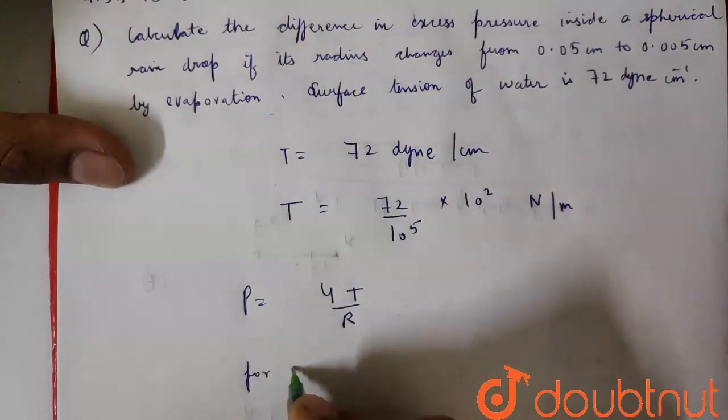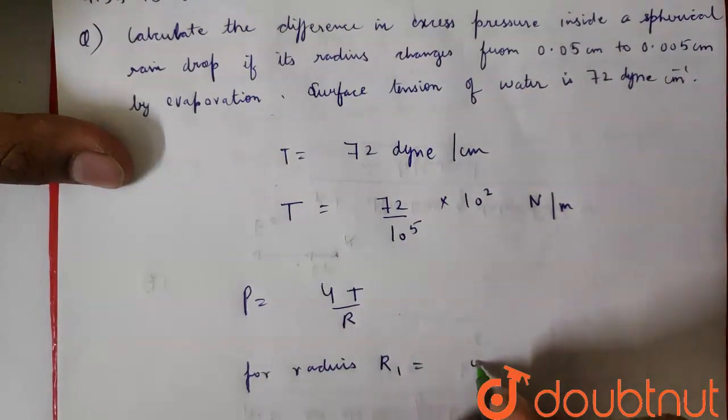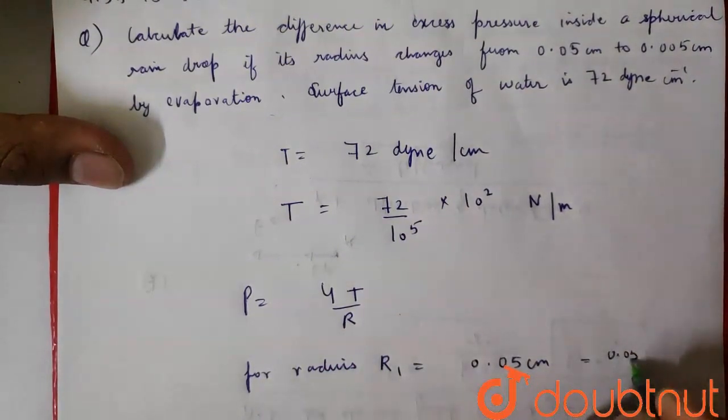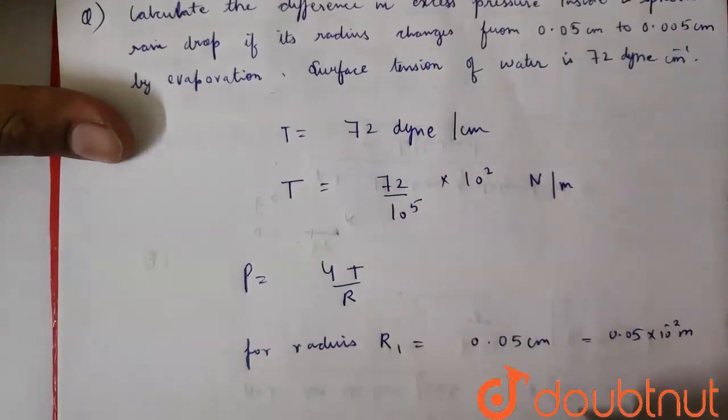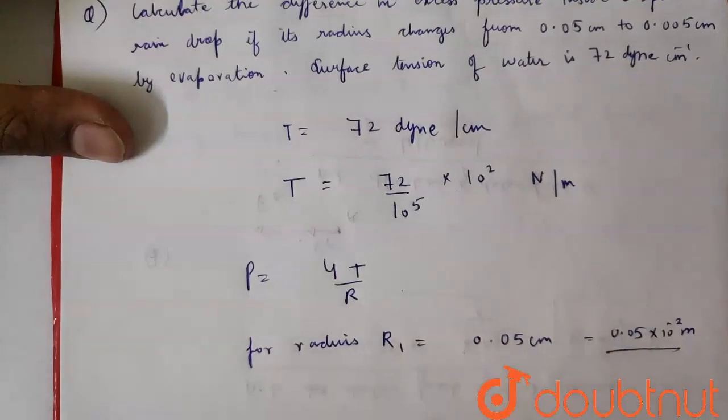For radius r1 equal to 0.05 cm, that is 0.05 times 10 to the power minus 2 meter.